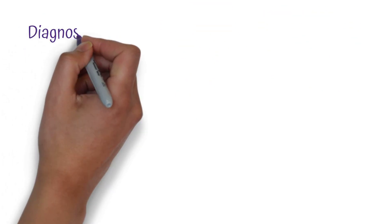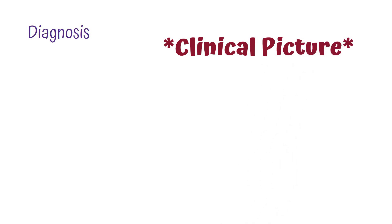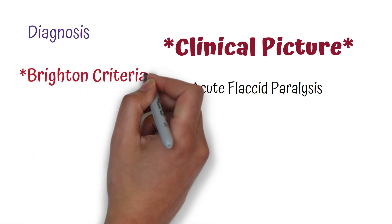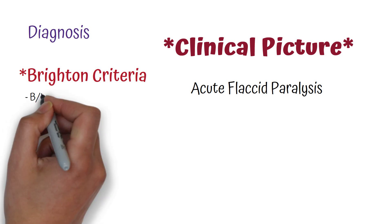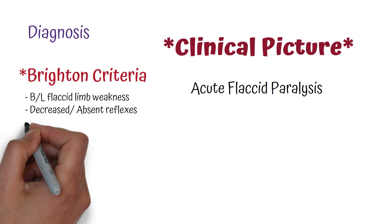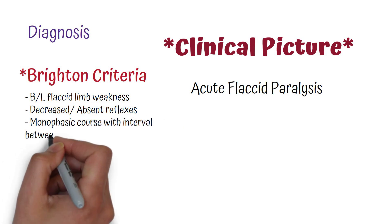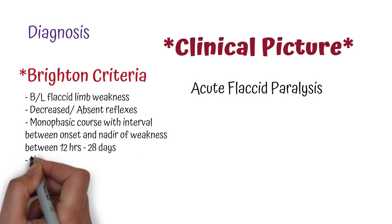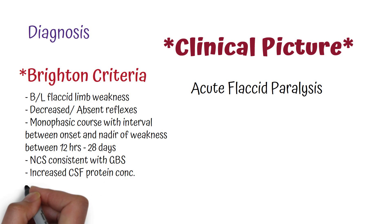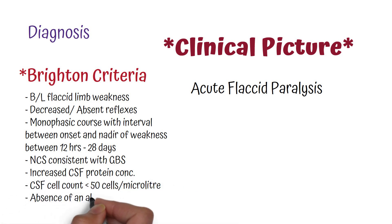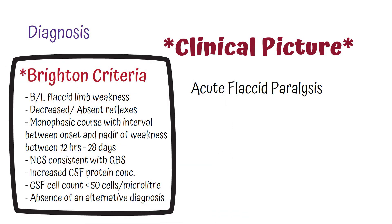How do we diagnose patients with Guillain-Barré syndrome? The most important element is the clinical picture of acute flaccid paralysis, but there is no specific test. However, the Brighton criteria can assist in diagnosis. This criteria includes bilateral flaccid limb weakness, decreased or absent tendon reflexes, a monophasic course with the interval between onset and nadir of weakness between 12 hours and 28 days, nerve conduction studies consistent with GBS, increased cerebrospinal fluid protein concentration, CSF cell count less than 50 cells per microlitre, and the absence of an alternative diagnosis.